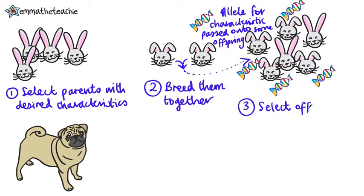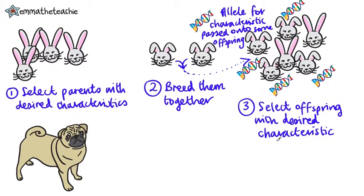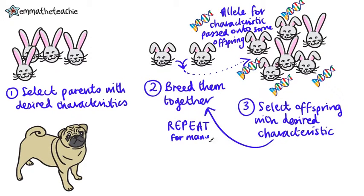The third step is to select the offspring that do have the desired characteristic — the floppy ears — and then breed them together. You repeat this for many generations, and eventually all of the offspring will have the desired characteristic.